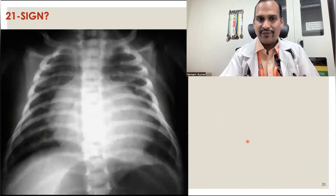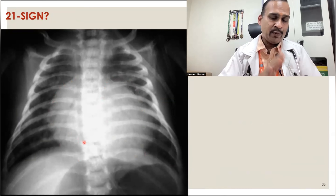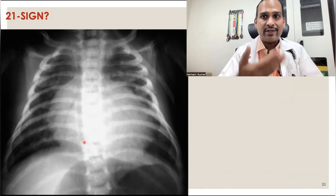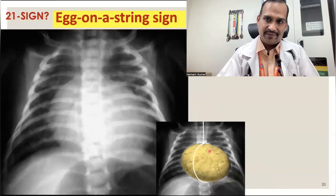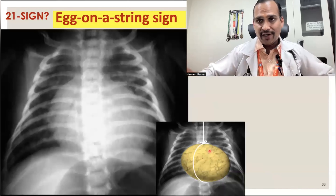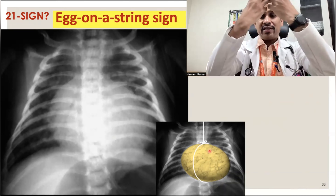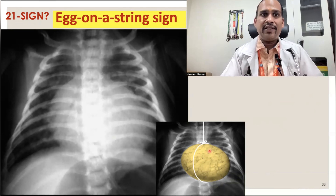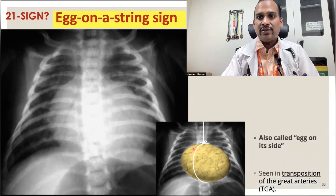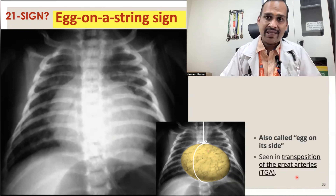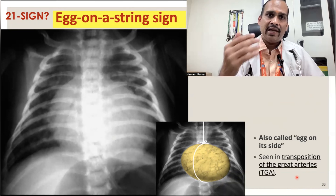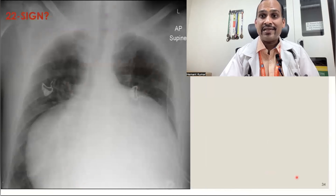Sign 21 is the egg-on-a-string sign, also called egg on its side. It is seen in younger age groups — infants of 1 or 2 years. Because of globular enlargement of the heart, there is pulling of the mediastinum downward, giving the egg-on-string appearance. It is seen in transposition of the great arteries, a congenital heart disease.